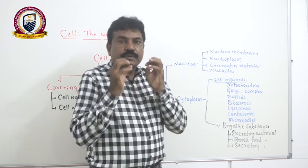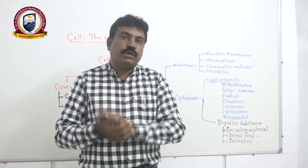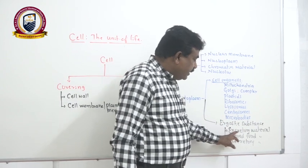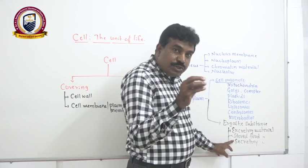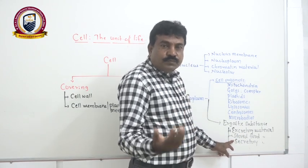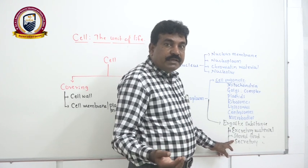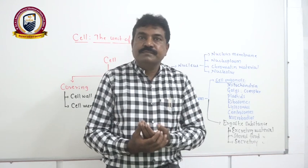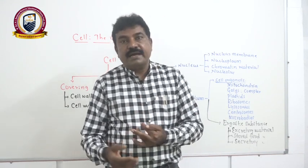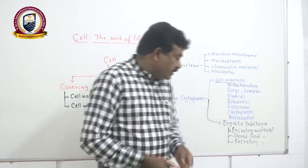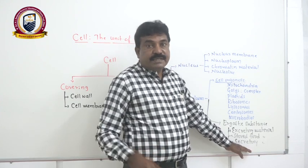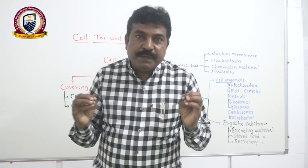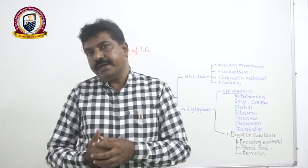Along with living organelles, there is plenty of non-living material in the cytoplasm, called non-living inclusions or ergastic substances. These may include excretory waste products, stored food materials such as proteins, carbohydrates, lipids, minerals, and vitamins, as well as secretory materials like latex, stains, fragrance, nectar, hormones, and enzymes — in both animals and plants. This is the overall view of a typical cell, whether plant, animal, or prokaryotic.